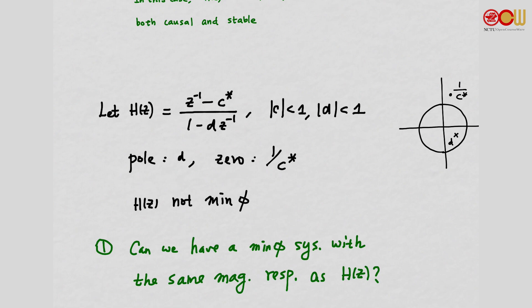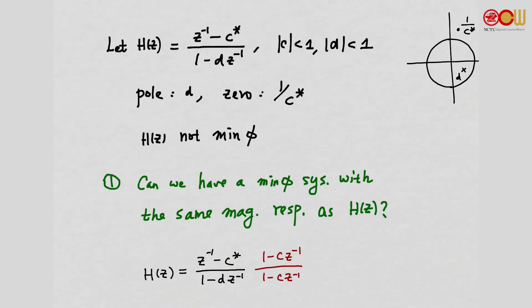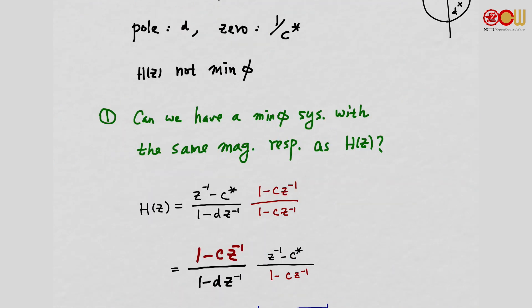The first question: is it possible to find a minimum phase system that has the same magnitude response as H? H is not minimum phase, but we want a minimum phase system with the same magnitude. That is indeed the case. Starting from H, let's multiply 1 - Z^{-1} at both the numerator and denominator and rearrange.